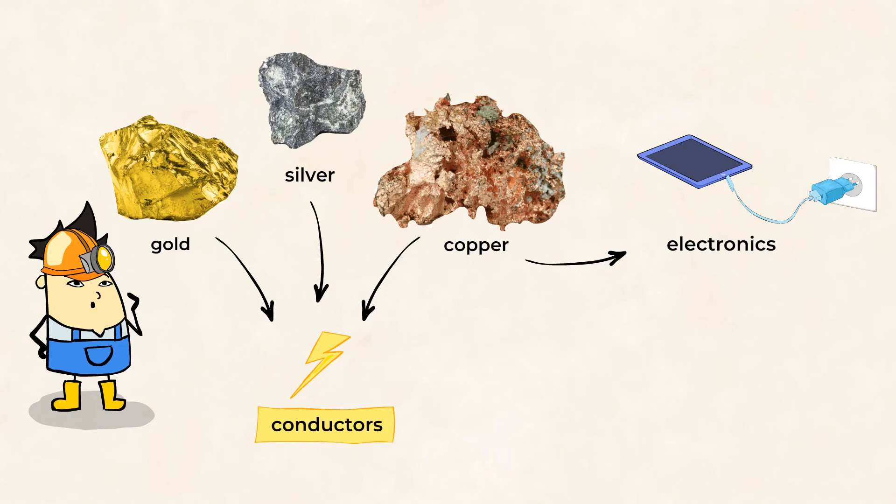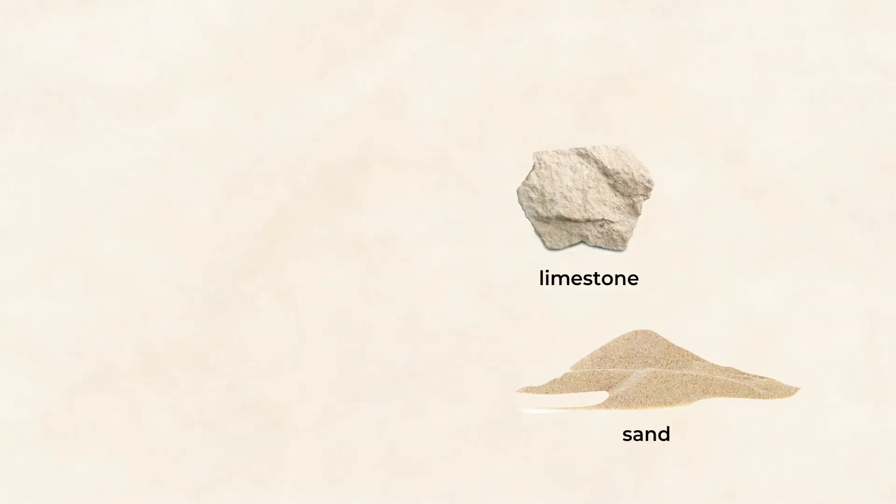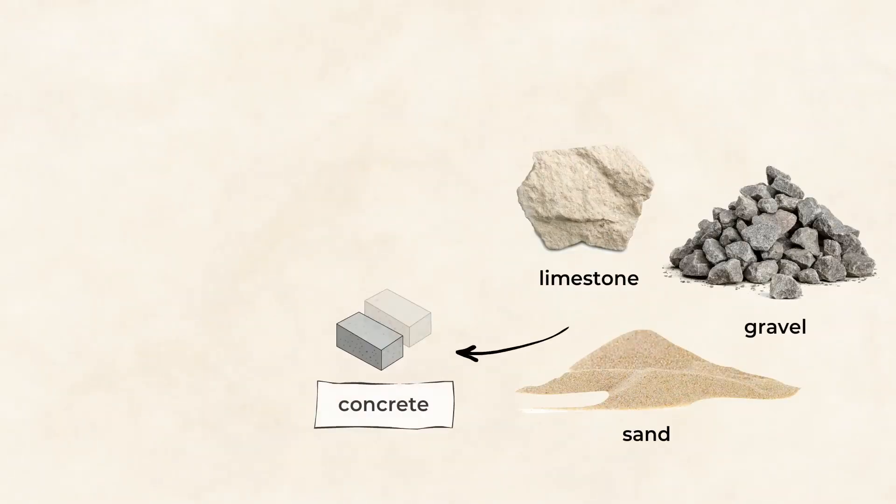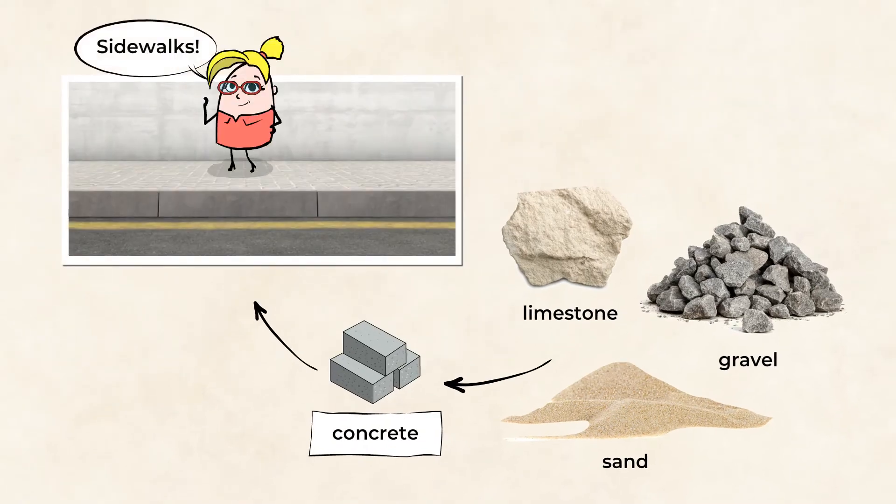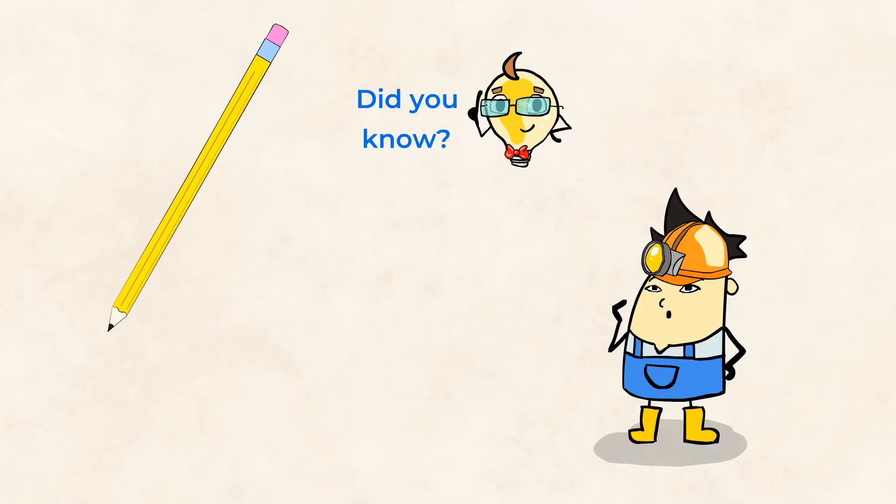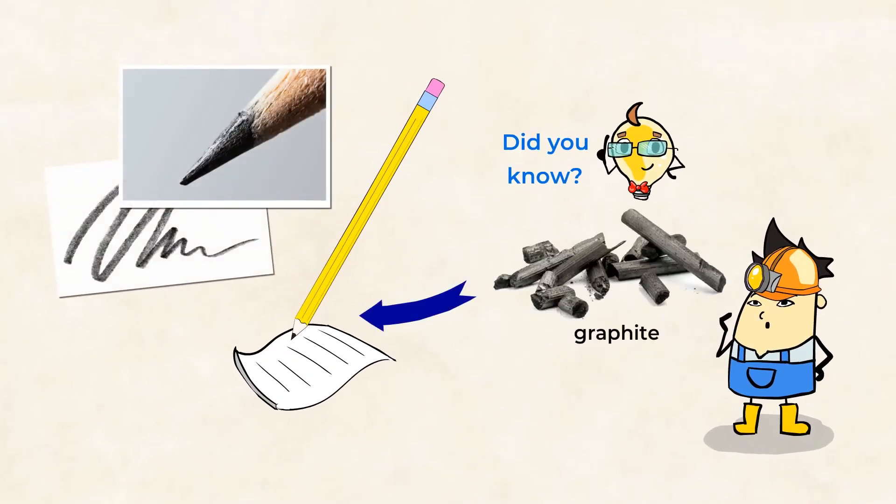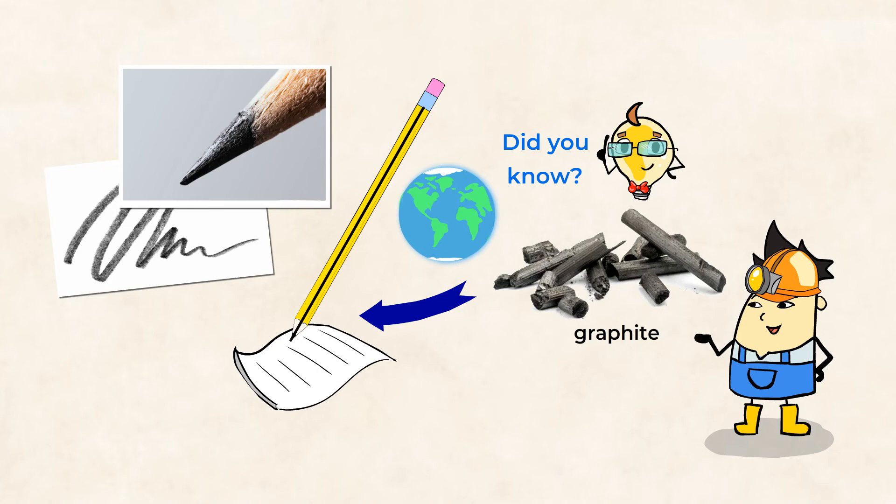Limestone, sand, and gravel are used to make the concrete that creates the sidewalks that we walk on. Did you know that even the pencil you write your name with contains a mineral? Graphite is the dark piece in the center of our pencils that allows us to leave our mark on papers. So as you can see, rocks and minerals are everywhere we turn, and they truly rock our world.